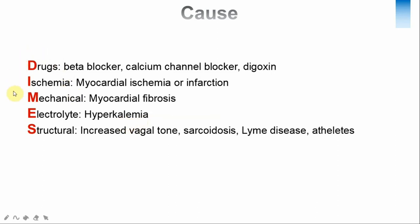To help memorize the causes, I use the mnemonic DIMES: D for drugs, I for ischemia, M for mechanical causes, E for electrolyte abnormalities, and S for structural causes. These are the main causes of first degree atrioventricular block.